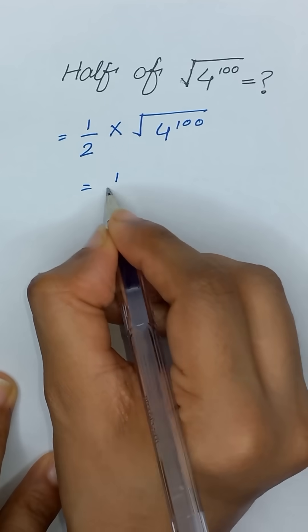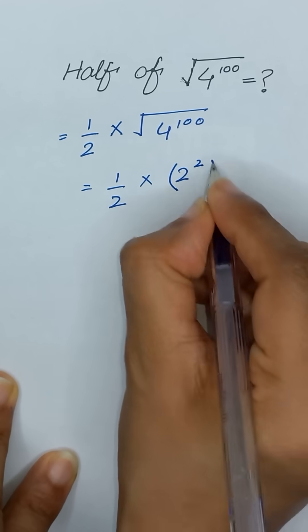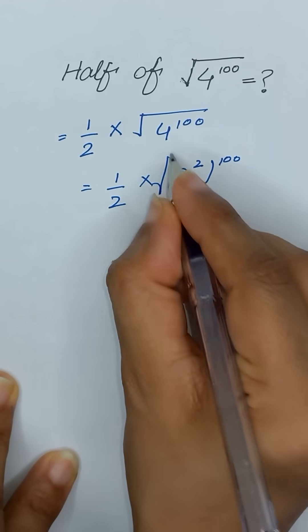Okay, 1 divided by 2 times, 4 can be written as 2 to the power 2 and its whole power is 100 and its square root.